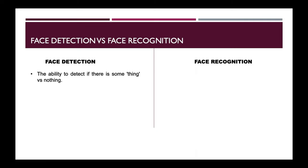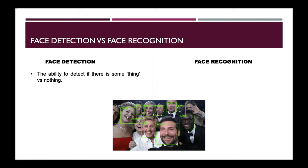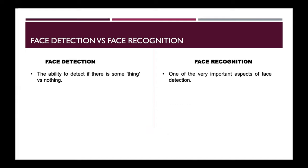Face detection gives the computer the ability to detect faces within an image. For example, an image might have two to three different faces, and face detection helps the computer identify those faces. Face recognition goes further — it not only detects faces within the image but also tells the user what particular face that is, giving an identity to that face.